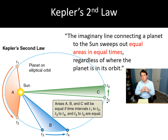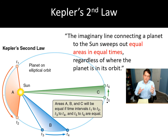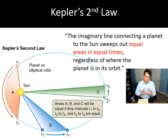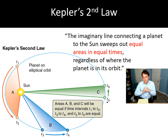That's Kepler's first law. There are three laws total, so let's move on to the second. The second one is a little more esoteric, so we'll spend time on its implications. It's often referred to as the 'equal areas in equal times' law.